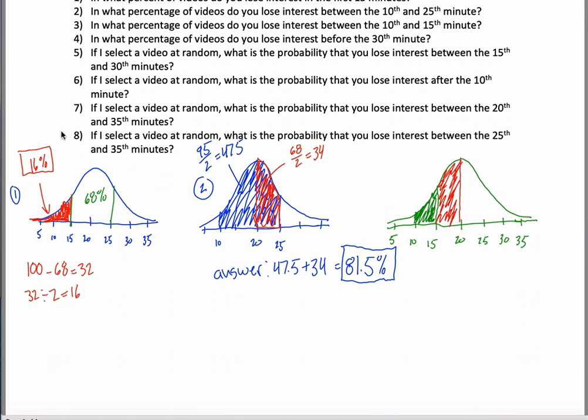Take advantage of the middle again. I end up taking advantage of the middle in just about every problem. This red area here is not part of my answer, but I know how big it is, right? Because I know from 15 to 25 is 68%. So from 15 to 20 is 34%, similar to how from 20 to 25 is 34%.